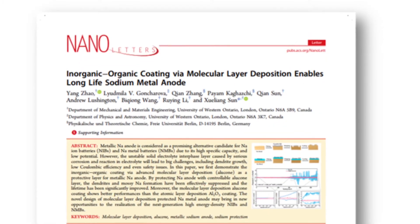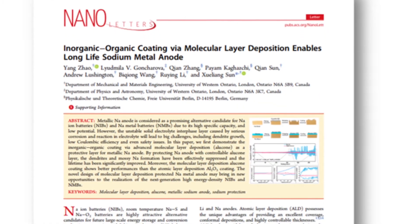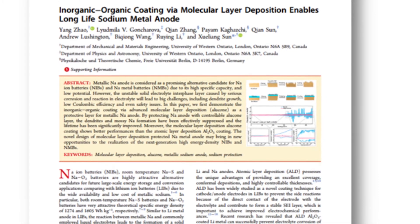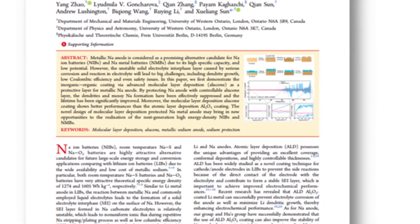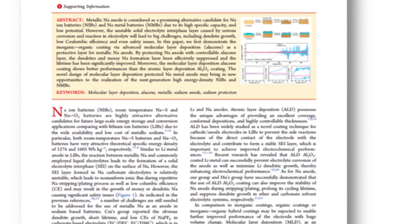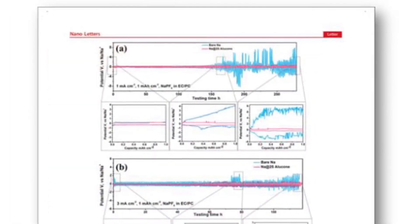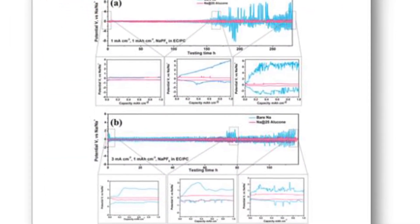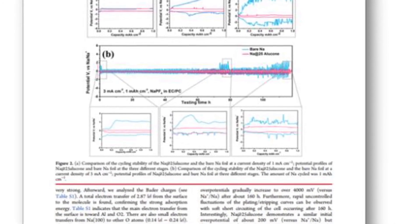We also use alucone as a protective layer for both lithium metal and sodium metal anodes, which can prevent the reactions between the alkaline metal and electrolyte, suppress the dendrite growth, and extend the lifetime of the metal.